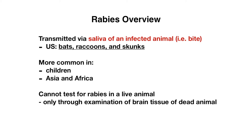In the United States, the most common rabies carriers are bats, raccoons, and skunks. It more commonly occurs in children and in Asia and Africa. In the United States, the cases are very, very rare, mainly because of prophylaxis.